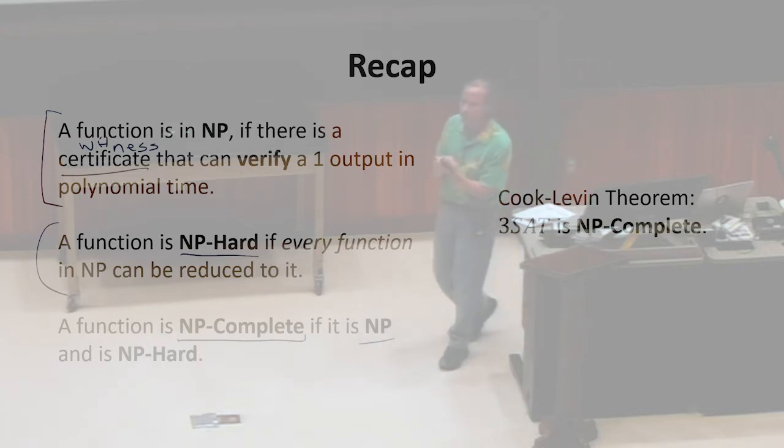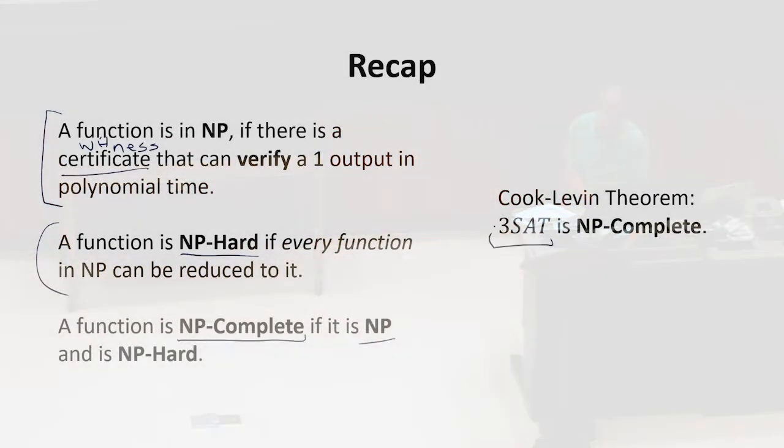What the Cook-Levin theorem proved, and we've seen what they actually proved was a little different, but the way we like to state it now and the way the book states it, is that we have a problem, 3SAT, which is the satisfiability of Boolean formulas in CNF. There's nothing really special about 3SAT, it's just that's a simple way to write down the Boolean formula that allows it to prove it. So we could do satisfiability of any formula, but what we know is that satisfiability problem is NP-complete.